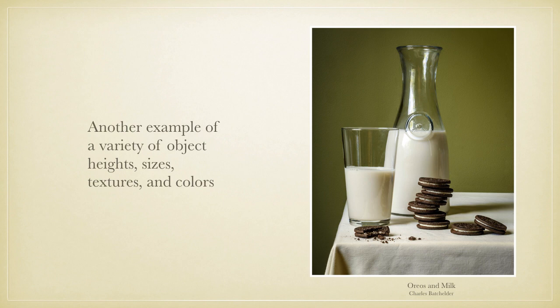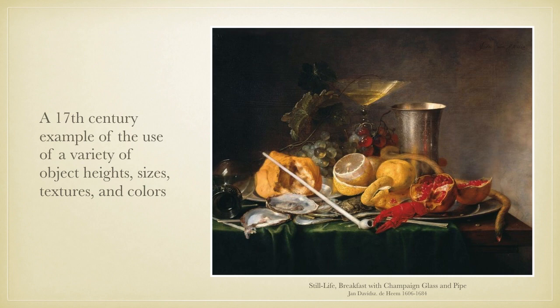This second photograph also has different sized objects of different heights, ranging from the tall carafe of milk to the flat Oreo cookie. There is also the texture of glass contrasted with the texture of the fabric and the cookies, especially the broken cookie. Texture is critical to traditional still life photography, and if you look closely you see that even the paint on the wall behind the arrangement has detailed texture in it. This 17th-century example has objects ranging from the tall champagne glass and metal cup to the tiny pomegranate seeds on the silver platter. It has textures ranging from hard, smooth glass and metal to crusty bread, slimy oysters, and juicy fruit, as well as a variety of colors — especially reds, yellows, and greens.